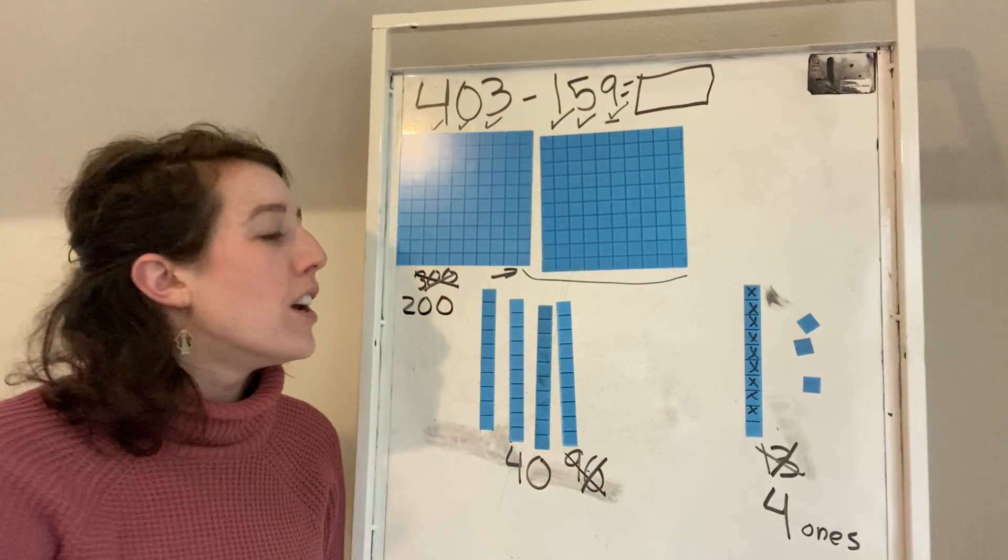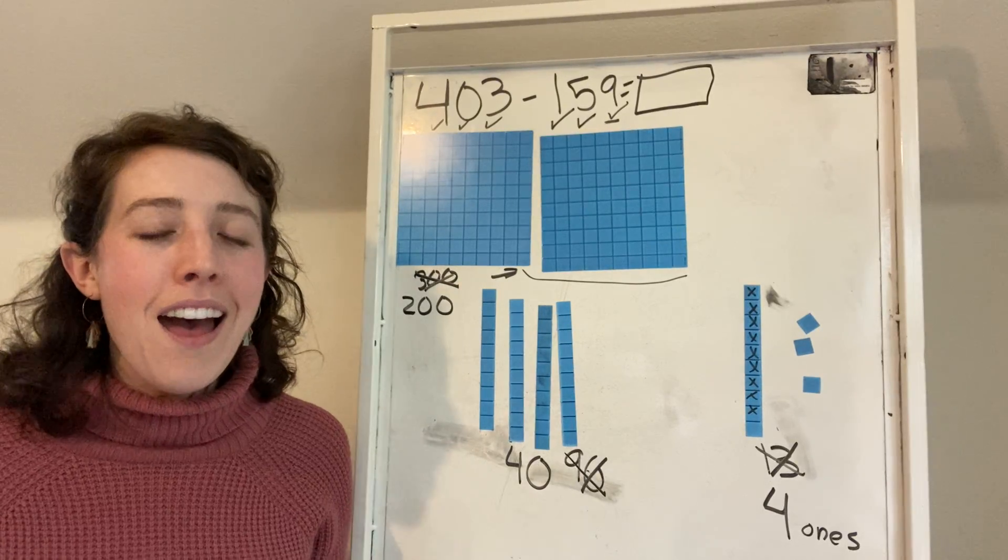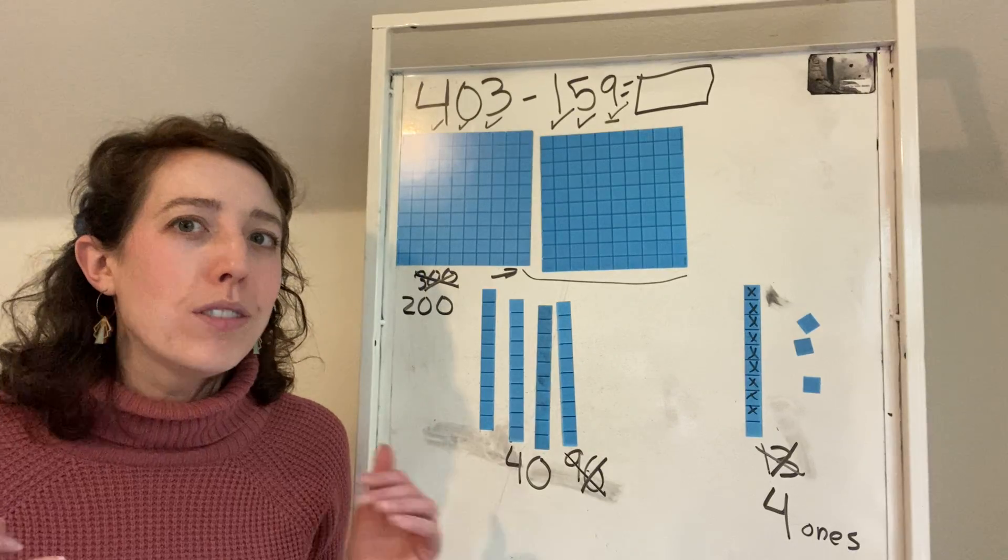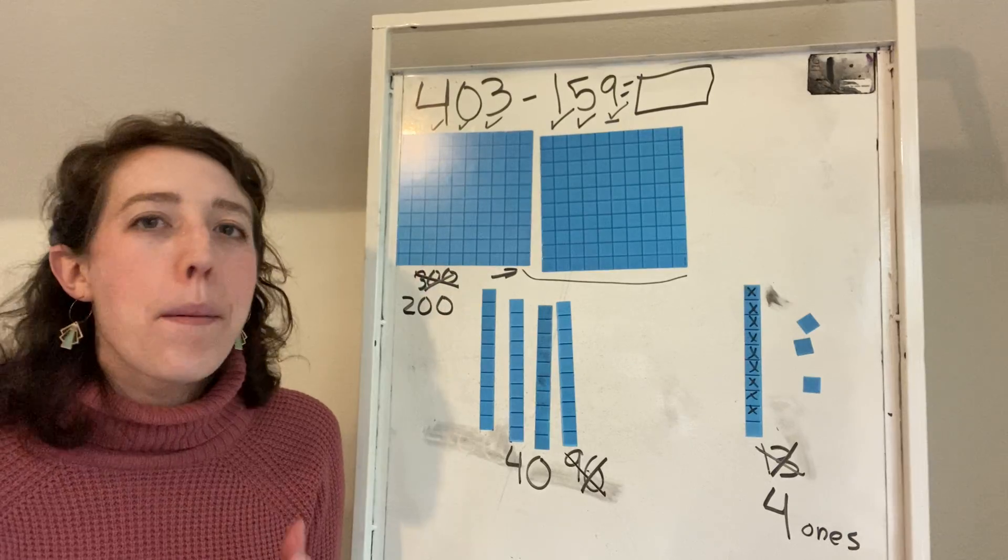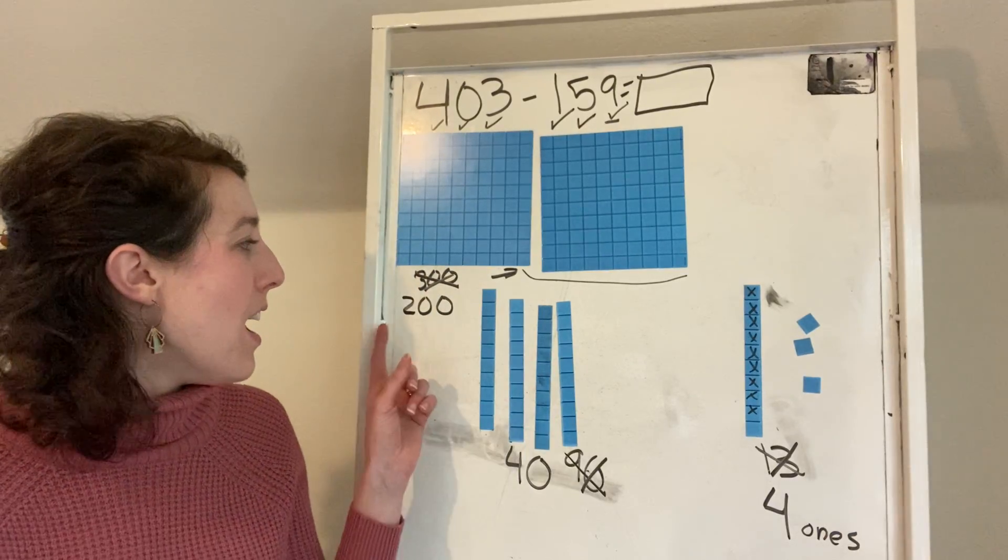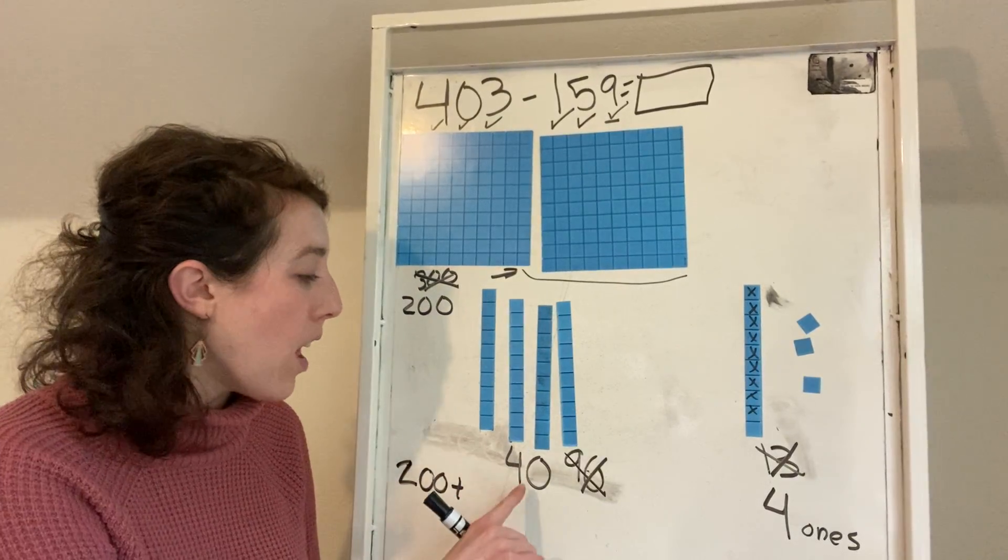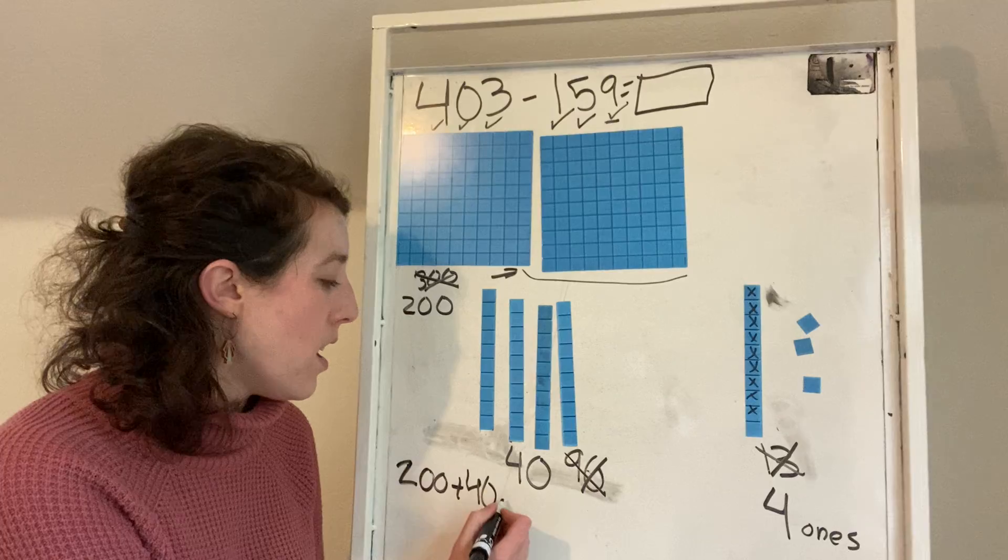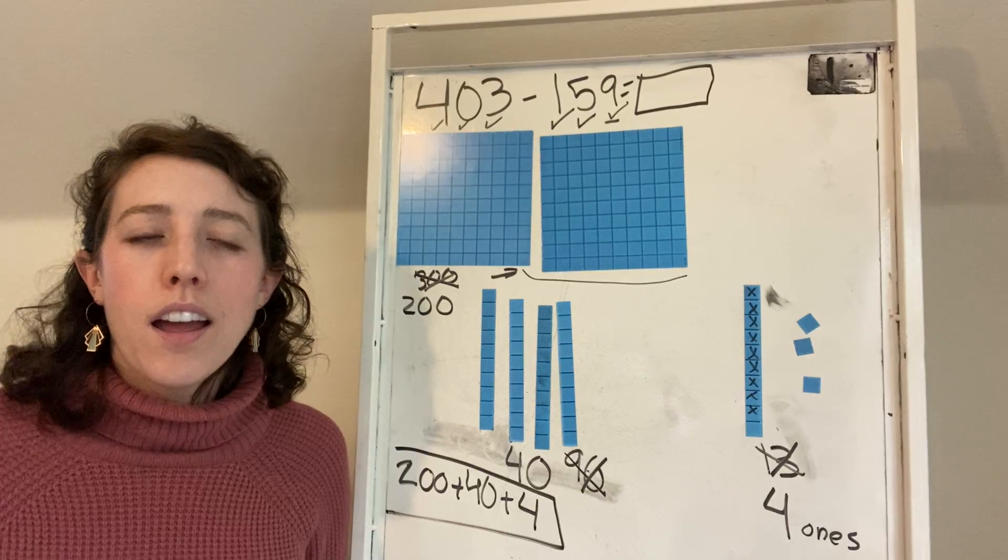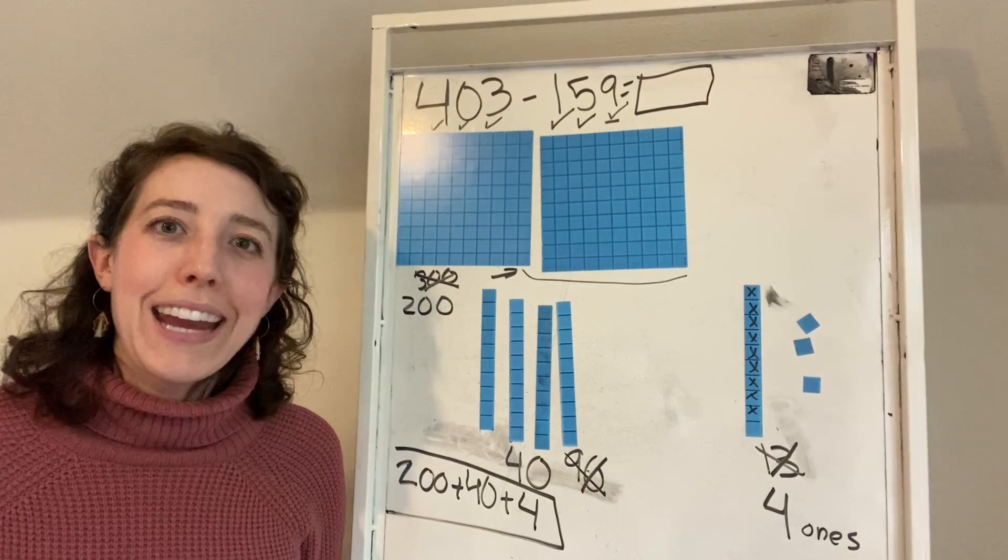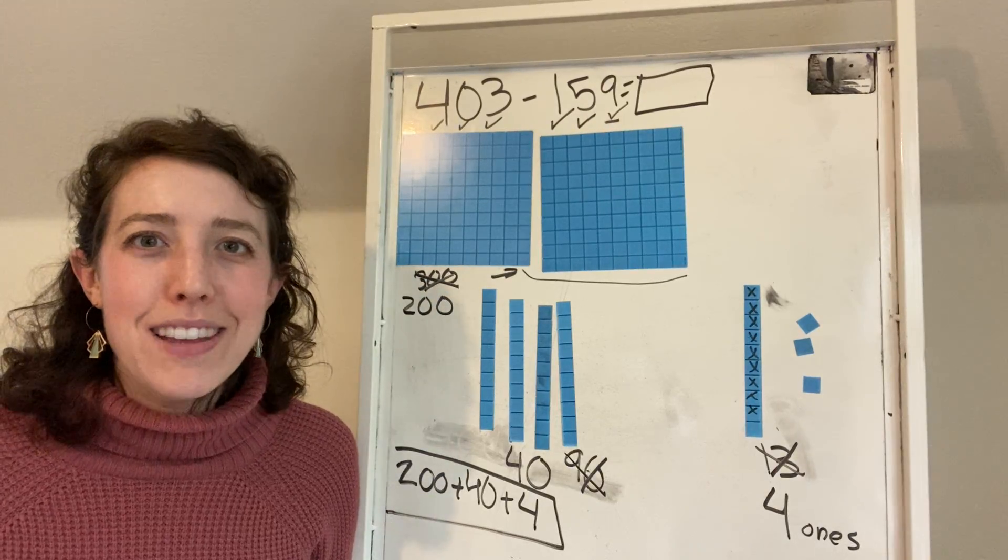So look, do you guys see our answer? Because I was writing labels as I went, my answer is actually in my labels. I have 200. Let's make sure that this shows up. I have 200 plus 40 plus 4 is going to give me my answer. But I could also count everything up if I wanted to just to make sure. So let's go ahead and count this up.